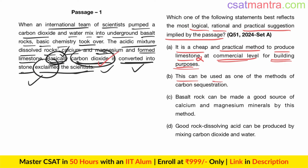Option B: 'This can be used as one of the methods of carbon sequestration.' Yes, this is certainly possible — carbon dioxide is being converted into stone, so this method can be used for carbon sequestration. This is correct.